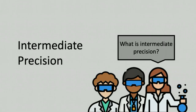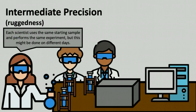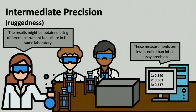The third type of precision is intermediate precision. Intermediate precision is sometimes called ruggedness and quantifies how reproducible a measurement is when an experiment is performed multiple times within the same laboratory. To determine intermediate precision, different scientists working in the same laboratory perform the same procedure using aliquots from the same sample. However, they might perform the experiment on different days and might also use different instruments to make the same final measurements. Because there are even more sources of variation in this setup, intermediate precision is often called ruggedness and is expected to be higher, or less precise, than intraassay precision. This is important for laboratories with many scientists and multiple instruments where it is unlikely that the same person or same instrument will be used for all of one type of analysis.